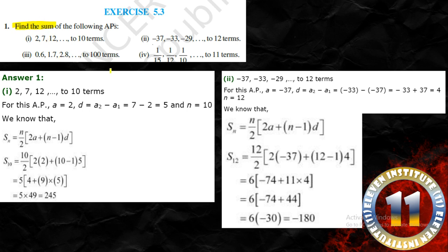Each and everywhere an arithmetic progression is given, so you can definitely have the value of a and d everywhere. Apart from that you also have been given the value of n — you have to find the sum up to 12 terms, up to 11 terms, and up to 100 terms. So you just have to apply the formula. The formula of Sn is applied everywhere. You can go through the steps, compare them with your answers, and in case you have made any mistake you can rectify it. So this is the solution for sub question number 1 and sub question number 2.